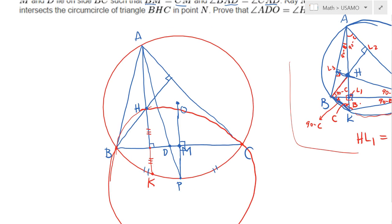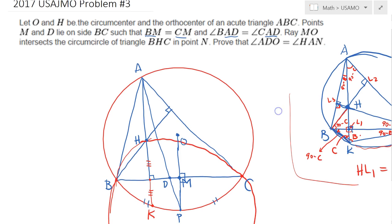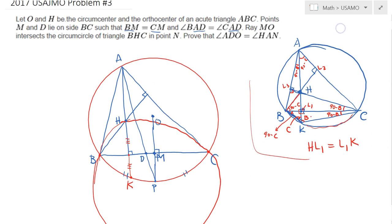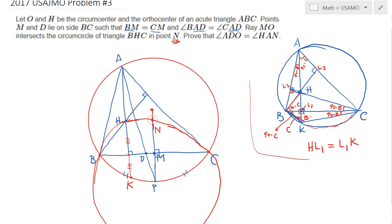The final step is to identify point N, which lies on the circumcircle of BHC at its intersection with ray MO. My picture is a bit messy, but let's say N is right here — and it's different from point O. The circumcenter O is a little higher up. So N is this point here and O is the circumcenter.